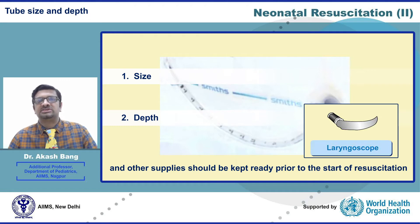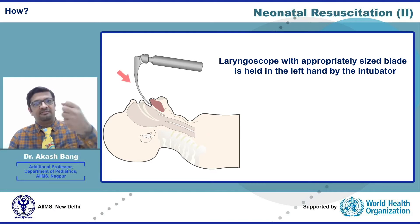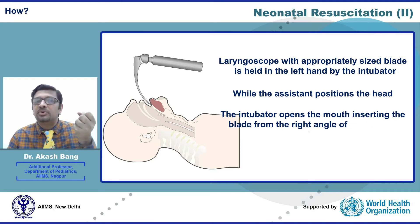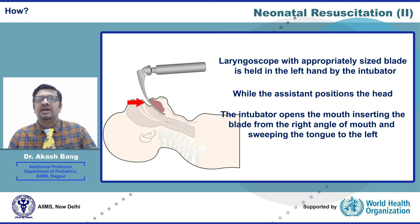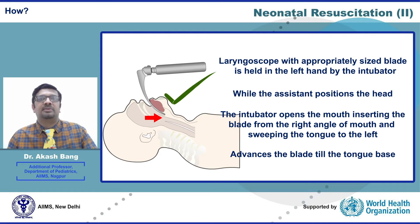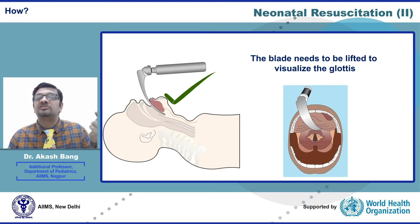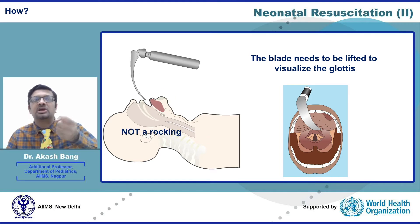Appropriately sized endotracheal tubes, a laryngoscope with blades, and other supplies should be kept ready prior to the start of resuscitation. The laryngoscope with an appropriately sized blade is held in the left hand by the intubator. While the assistant positions the head, the intubator opens the mouth, inserts the blade of the laryngoscope from the right angle of the mouth, sweeps the tongue to the left, and advances the blade to the tongue base. The blade then needs to be lifted to visualize the glottis — this is the most important step. The lifting movement must be done as shown on screen, not as a rocking movement.